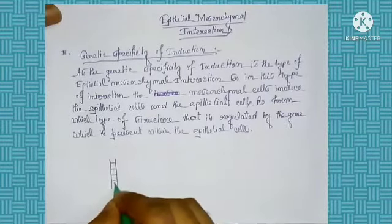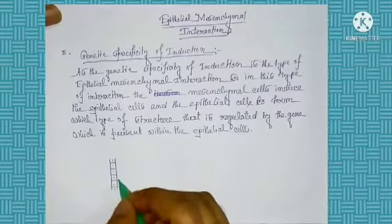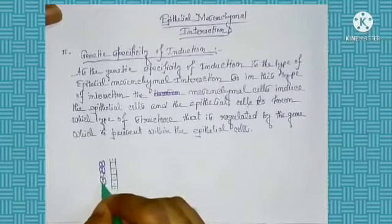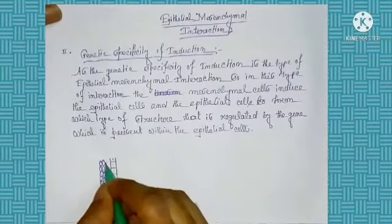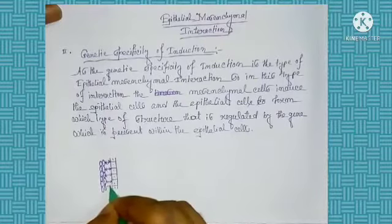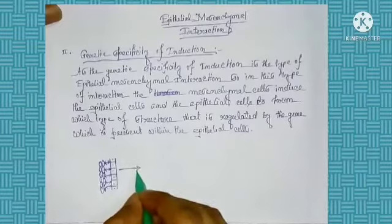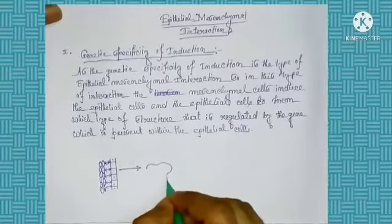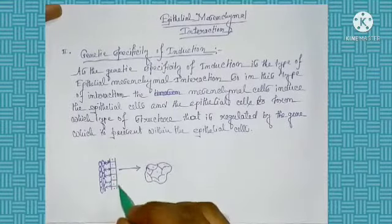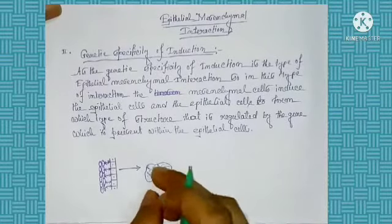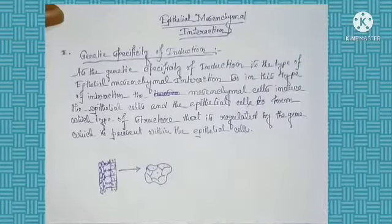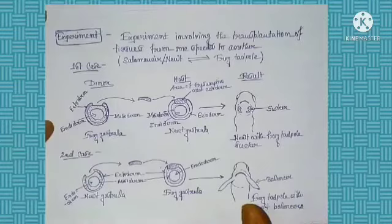This is the epithelial layer or the epithelial cell, and this is the mesenchymal cell. After the proper interaction between this epithelial and the mesenchymal cell, the epithelial cell forms a special structure. The formation of this structure by the epithelial cell is regulated by the gene which is present in the epithelial cell. As the gene is involved in this type of interaction, this is known as the genetic specificity of induction.